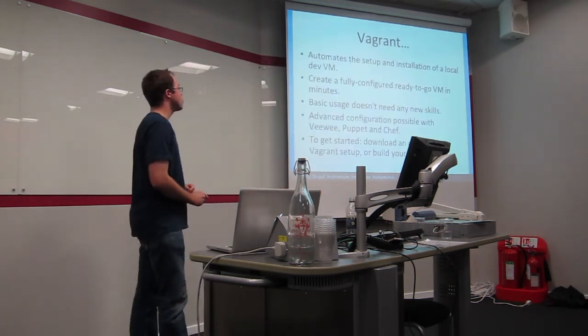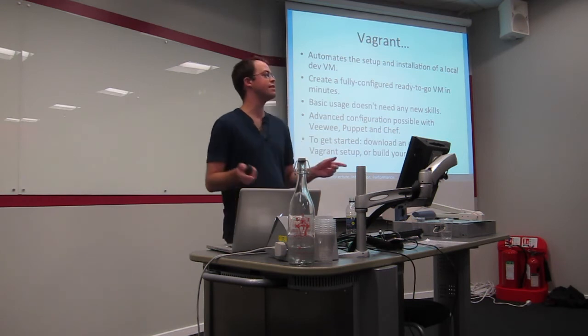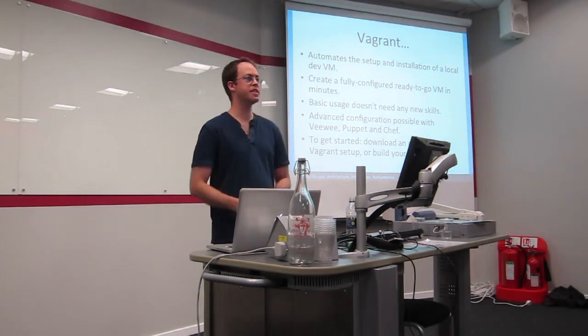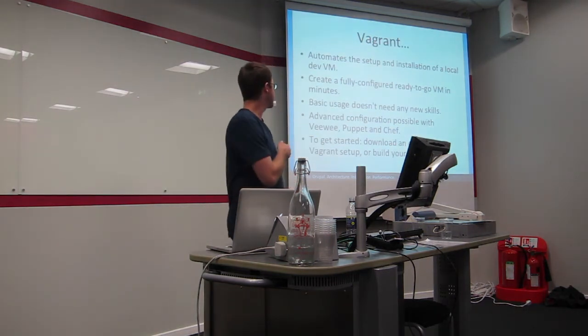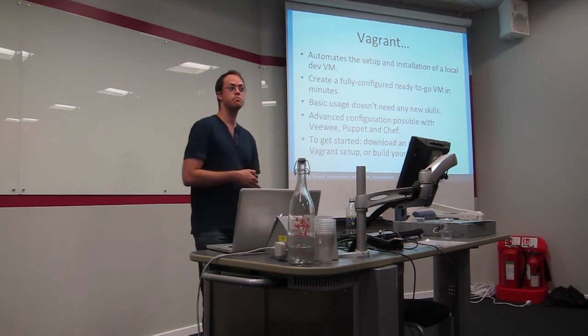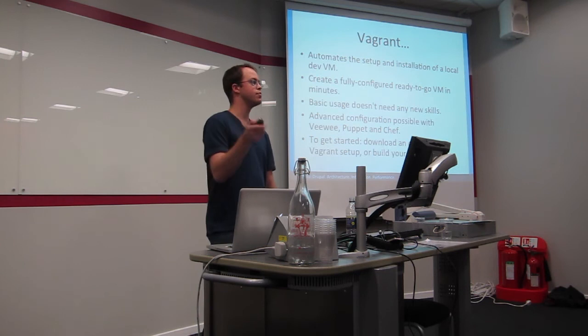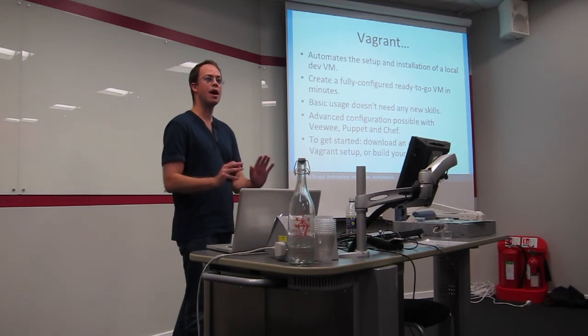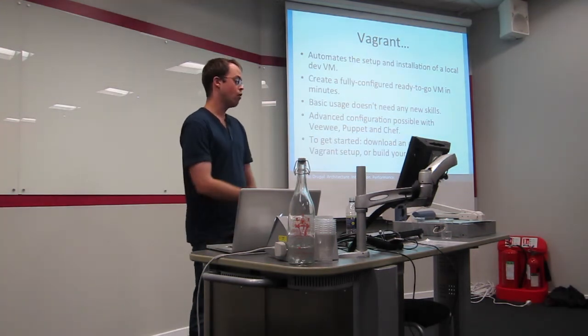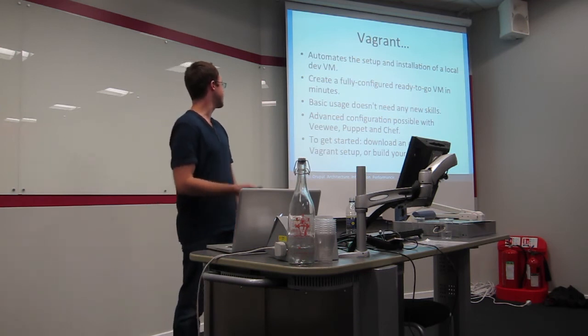So Vagrant automates the setup of a local dev environment. It gives you a setup that's ready to go in a couple of minutes. You don't need to learn anything else to start using Vagrant. You can start using it in five minutes time. If you want to do that without learning anything at all, find one of those open source Vagrant setups. So either the link that I gave you from this demo. Or one of the Drupal.org project slash Vagrant VMs. Type Vagrant init. Vagrant up. And you're done. Or if you really want to go full Ballard, you can create your own chef config, your own puppet config, your own base boxes.